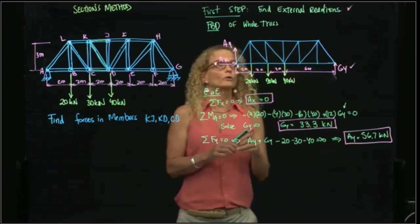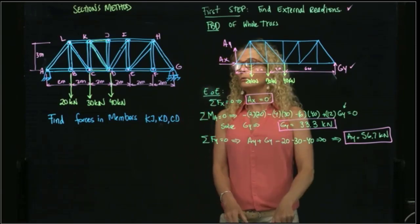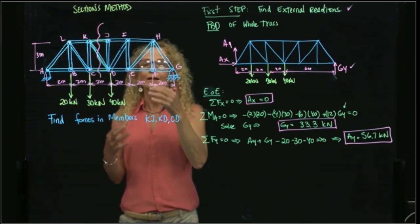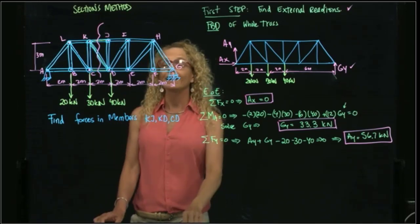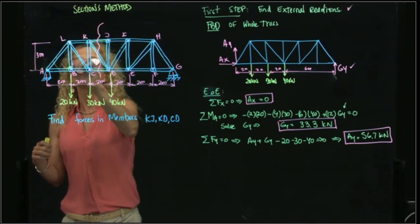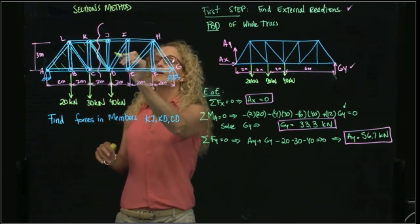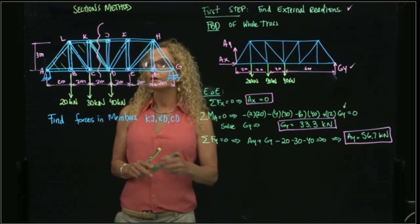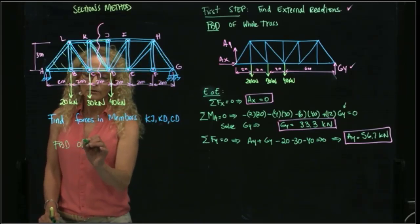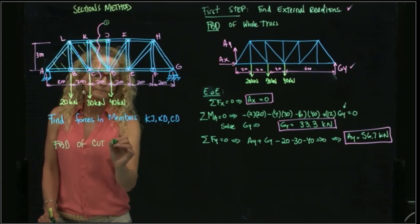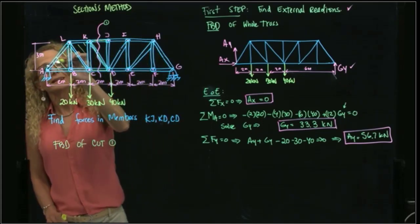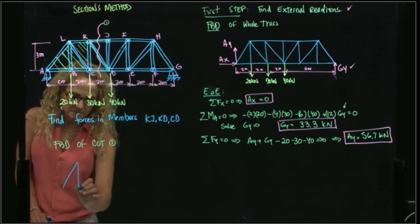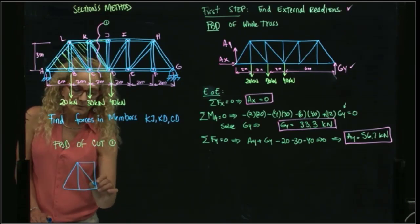I was able to find my external reactions. Now I can make my cut so I can see what is happening internally. Once I do the cut, I can draw the free body diagram on the left side of the cut. I could also draw the free body diagram to the right — in either case, you will get exactly the same answers. Let's do the free body diagram of cut one. I will draw the rigid body that is to the left of my cut.